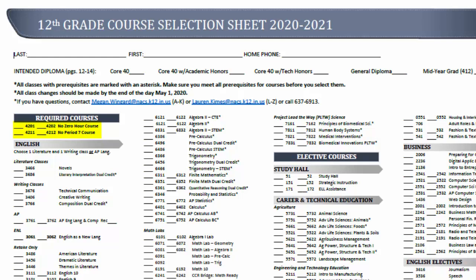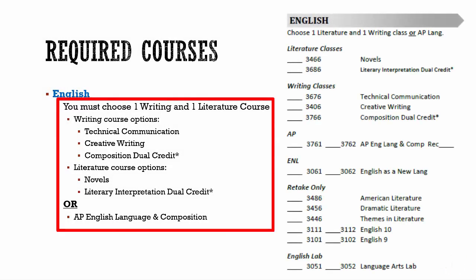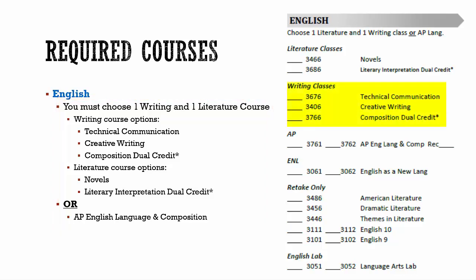There are some required courses that all seniors need to have on their course selection sheet. The first is English — you have to take one writing and one literature or AP language. Options for writing include technical communication, creative writing, or composition dual credit.